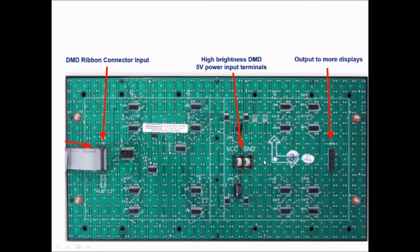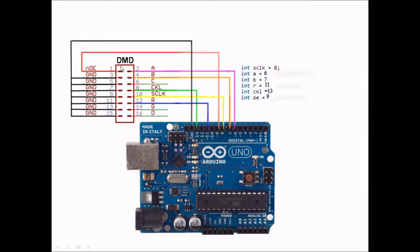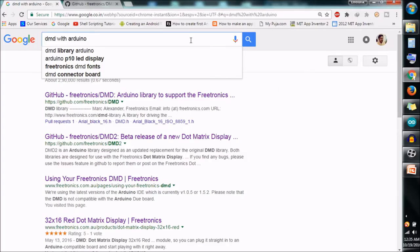Here is the main part — the DMD shield. It is easy to make if you know basic soldering; you can use a dotted PCB board. The ribbon connector has a total of 16 pins. Pins 3 to 15 are all grounded and connected to the Arduino ground. Pin 1 connects to Arduino pin 9, pin 2 to pin 6, pin 4 to pin 7, pin 8 to pin 13, pin 10 to pin 8, and pin 12 to pin 11. You can make a board or use pin connectors to connect to the Arduino.